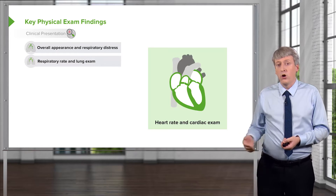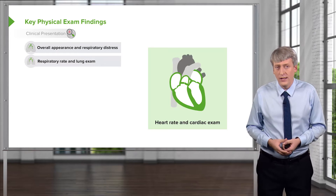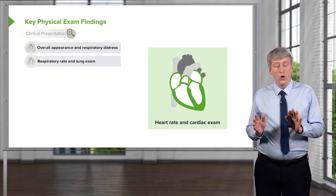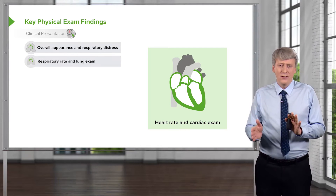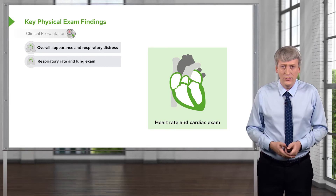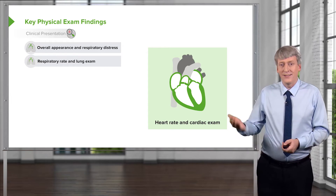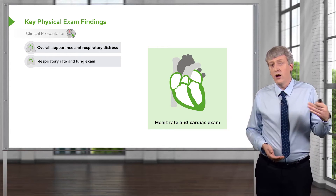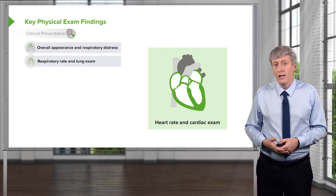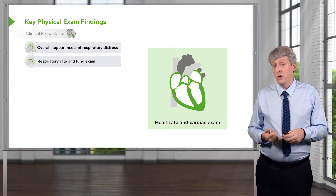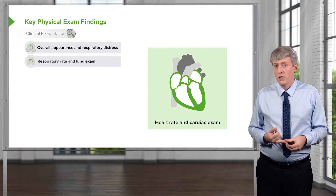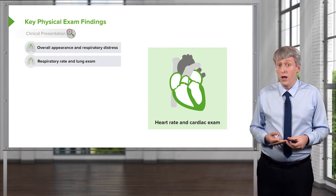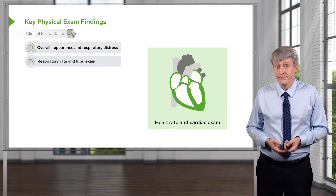It's important to note their heart rate and cardiac exam, keeping in mind that albuterol, once given, is absolutely going to cause tachycardia as a side effect of the drug. But if they're having a high heart rate, it may be because they're afraid, they have air hunger, or because they're having problems with oxygenation.